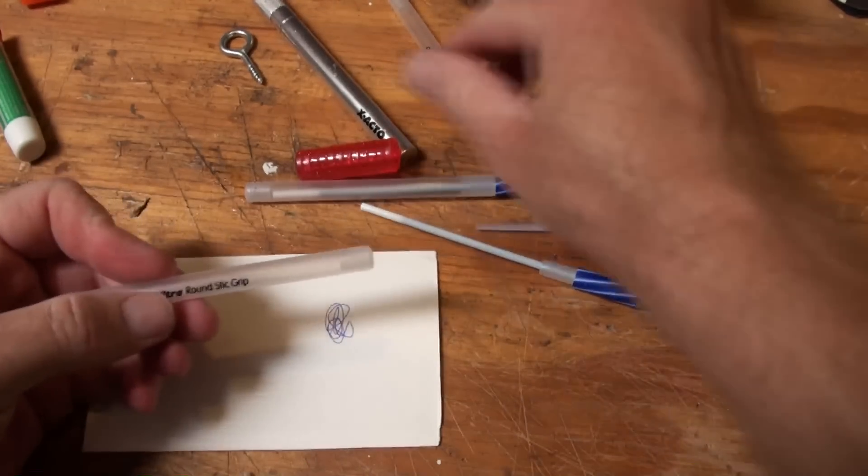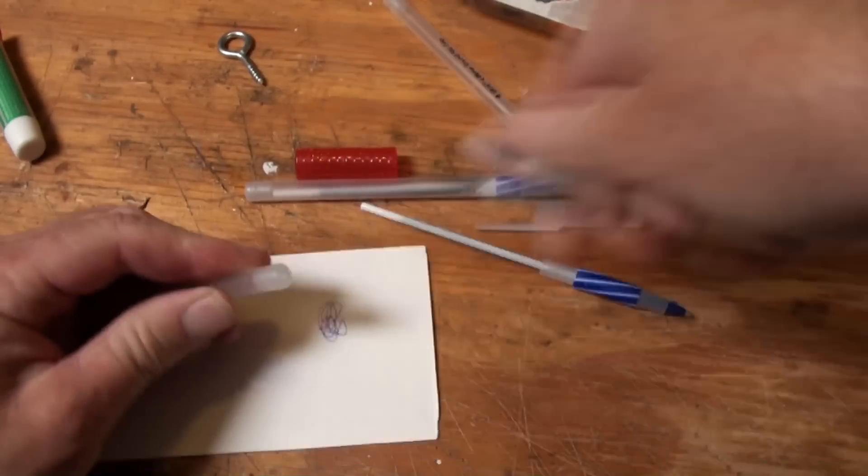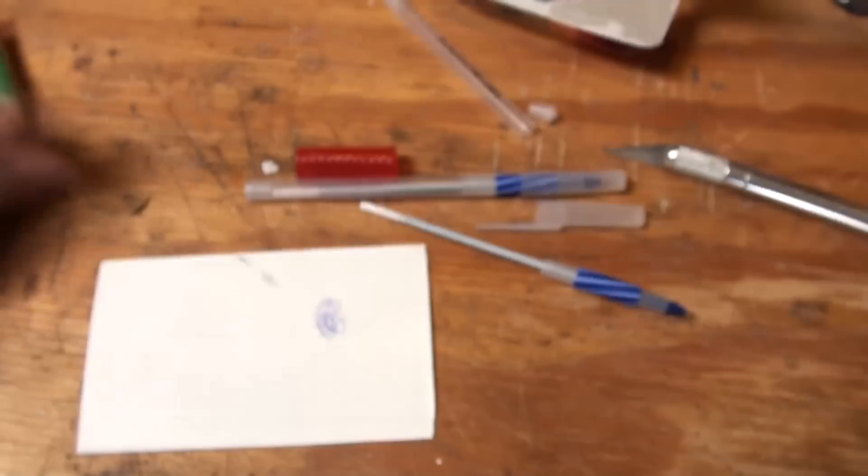This gives you your body. Extract the end cap. Start a little hole with an X-Acto knife. Screw it in so that it grabs the end cap. Pull it out.